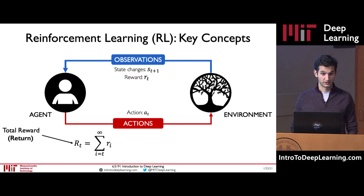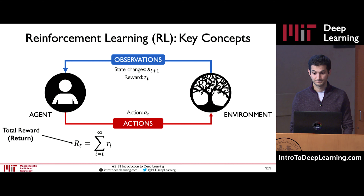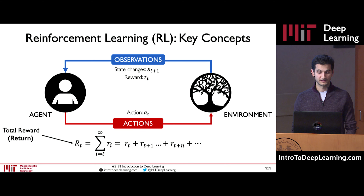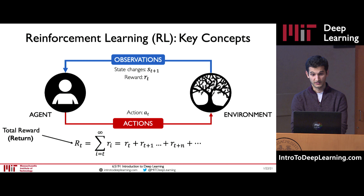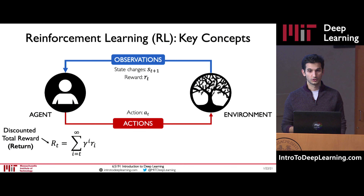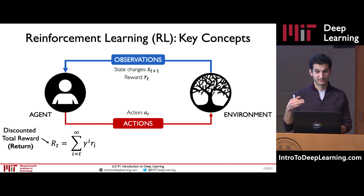We can formulate the total reward the agent is going to see, which is just the sum of all rewards after any certain time t. Capital R of t, also called the return, is the reward at time t plus the reward at time t+1, all the way to infinity. It's often useful to consider not only the total reward, but also what we call a discounted total reward or discounted sum of future rewards. The discount factor is represented by the gamma parameter — instead of just adding all rewards, we multiply by this discount factor to dampen future rewards' effects on the agent's action choices.